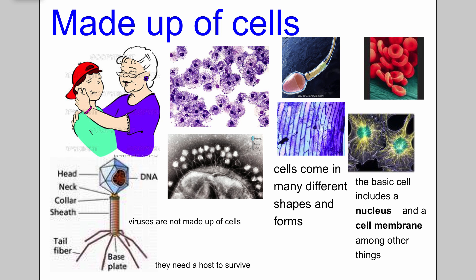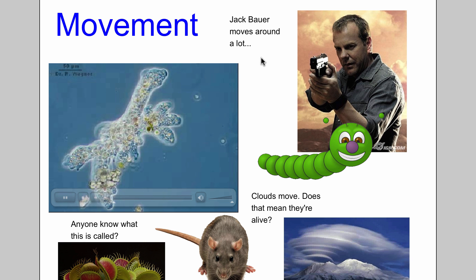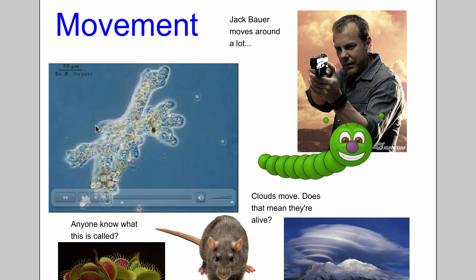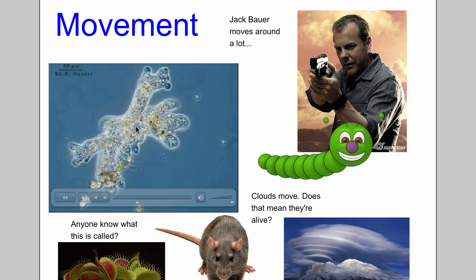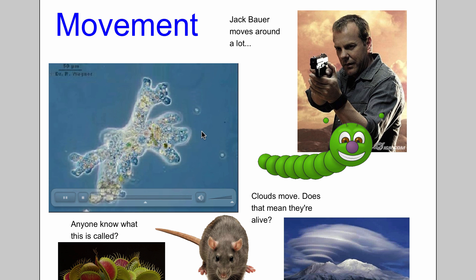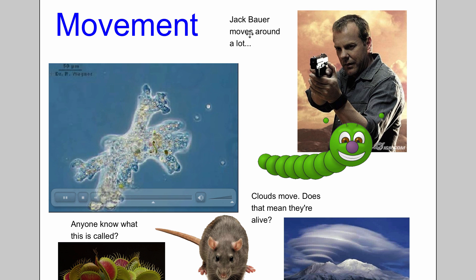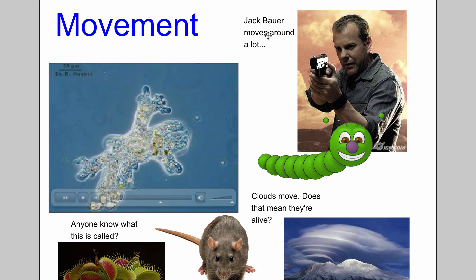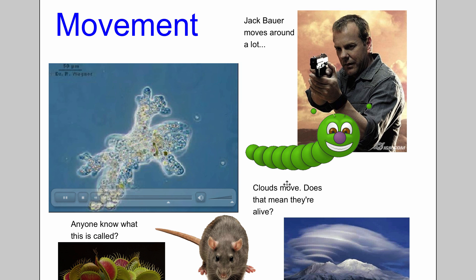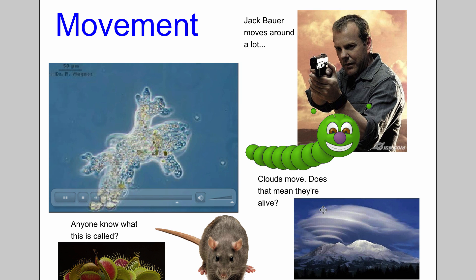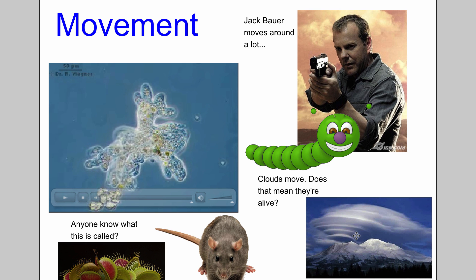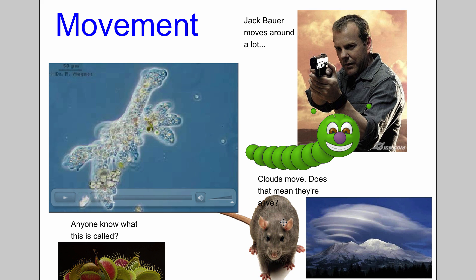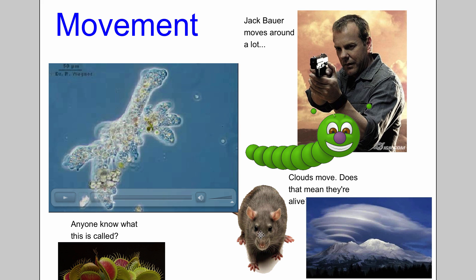The first thing you ask yourself when you pick up something on the floor: could this be made up of cells? If it is, it might be alive. But then you've also got to ask: is there any kind of movement? Here you can see a video of an amoeba — a single-celled living organism — actually moving and changing the shape of its membrane as it crawls through a petri dish. But clouds also move around a lot. Does that mean they're alive? Be careful about that. Is it made up of cells? How about this rat — is it alive? Yes, unfortunately.